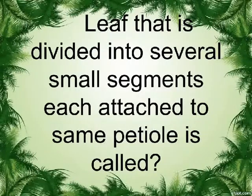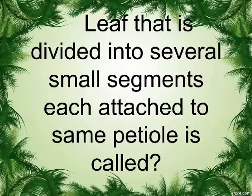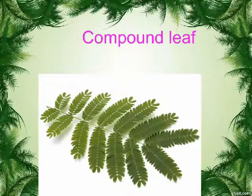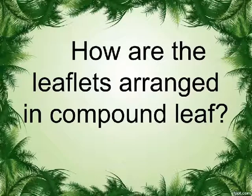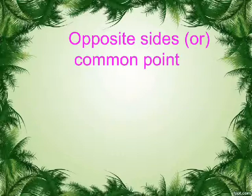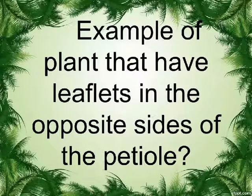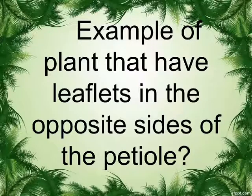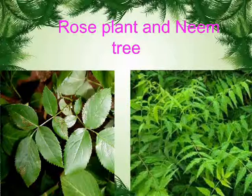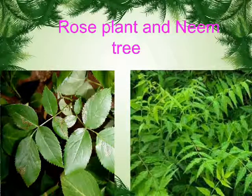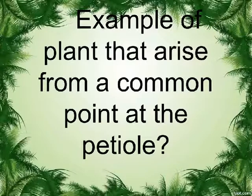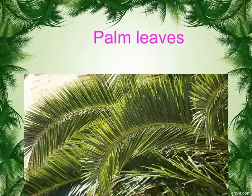A leaf that is divided into several small segments, each attached to the same petiole, is called a compound leaf. The leaflets can be arranged on opposite sides or from a common point. Examples of plants with leaflets on opposite sides of the petiole include the rose plant and neem tree. An example of leaflets arising from a common point at the petiole is palm leaves.